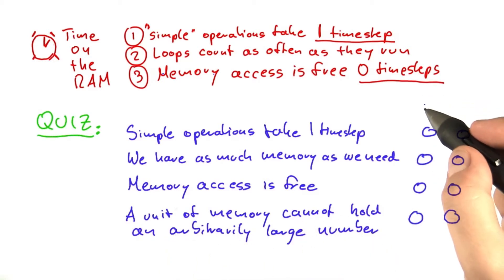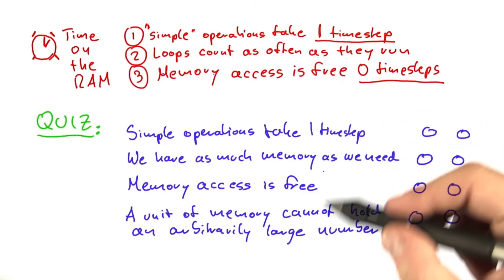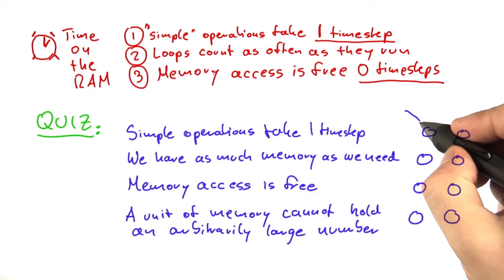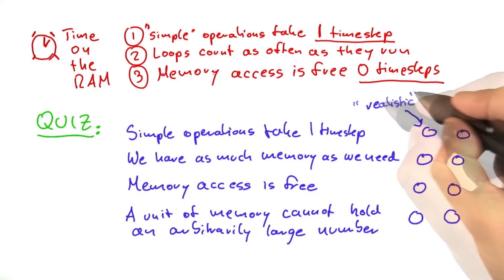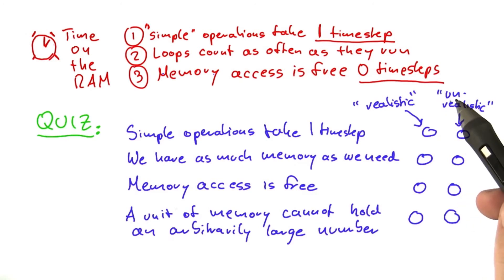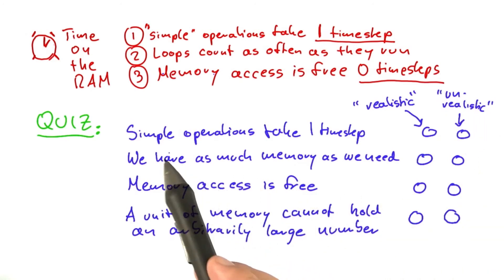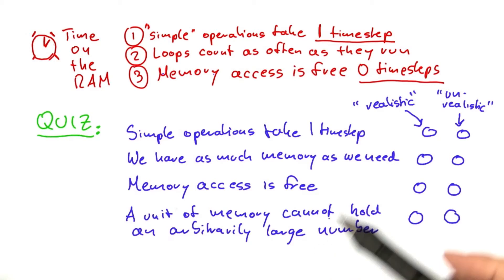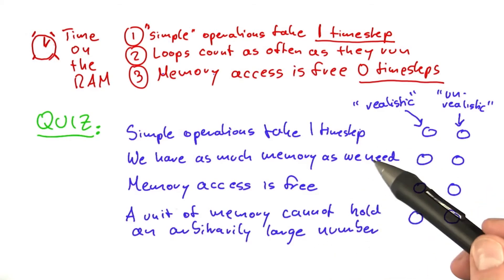This is going to be subjective. But I would like you to tell me which of these four properties you think is realistic in the sense that it comes pretty close to a real computer, and which of these you would consider unrealistic, meaning if you were to run your algorithm on a real machine, then there would be considerable differences. Again, the answers to these are subjective. So if you get stuck or if you disagree with me, just click next and see where our opinions differ.